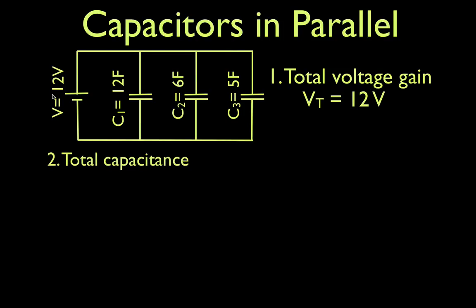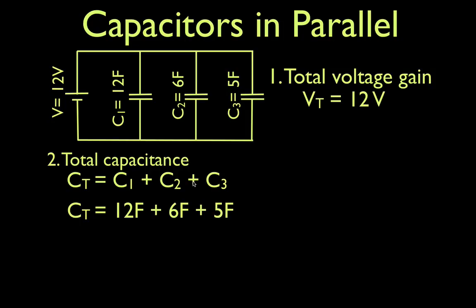Number two: the total or equivalent capacitance. We have three capacitors — a 12-farad, a 6-farad, and a 5-farad capacitor — hooked up in parallel. The rule is that the total capacitance equals C1 + C2 + C3. All you do is add them up: 12 + 6 + 5, and you get an equivalent capacitance of 23 farads.